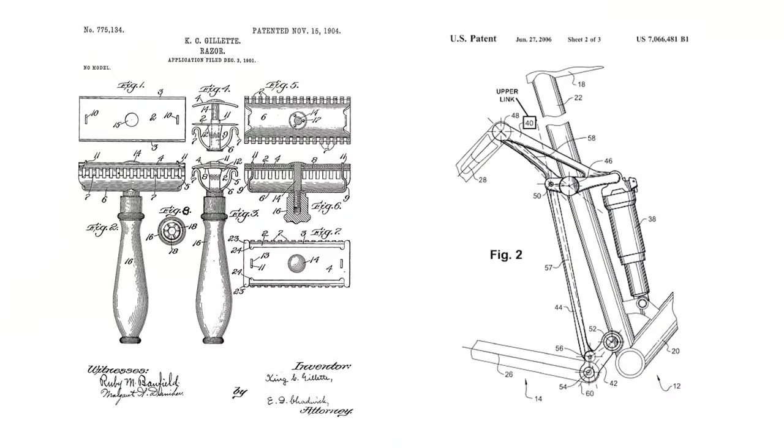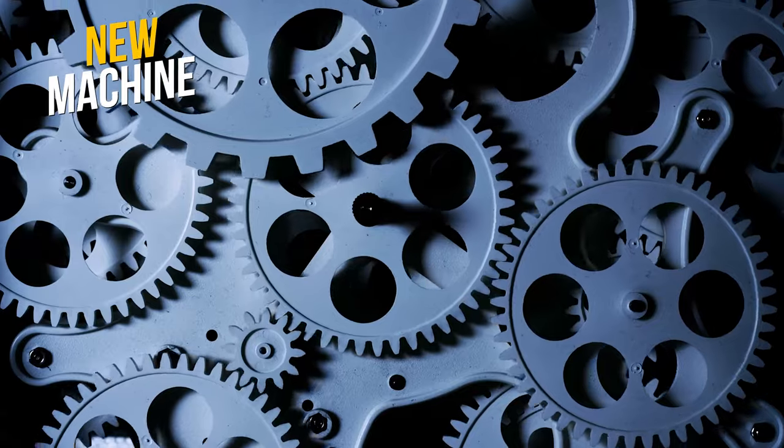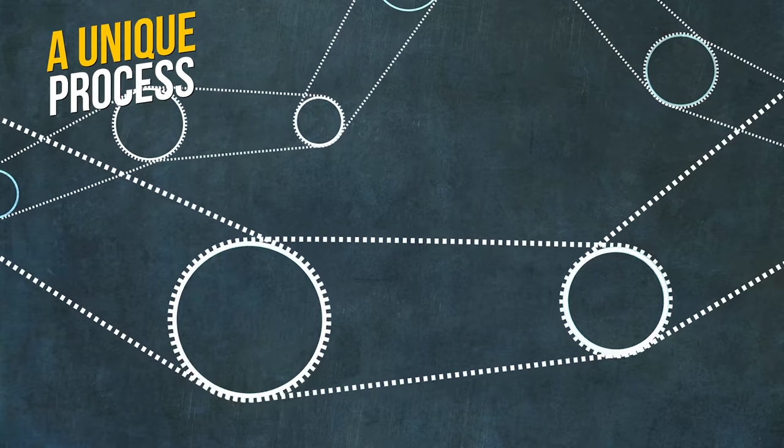Today we're going to explore the purpose of a utility patent. A utility patent is a type of patent that protects the functionality of an invention. It can cover anything from a new machine to a unique process, or even a new use for an existing product.